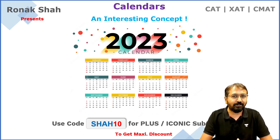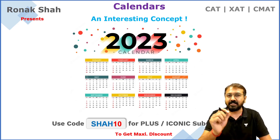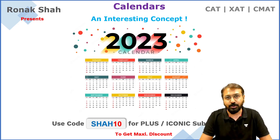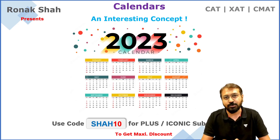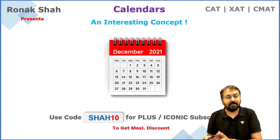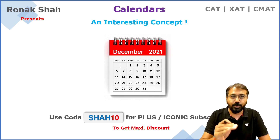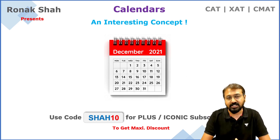Which will be the next year in the near future that will have the same calendar as 2023? It should be a normal year starting and ending with a Sunday. Sometimes you use complicated calculations, but in this video I'm going to give you a shortcut — a very simple approach using which you can calculate this in 10 seconds. Whether you are preparing for CAT, CMAT, or any other competitive exam, you can come across such questions, and in this video you are going to learn an amazing trick.